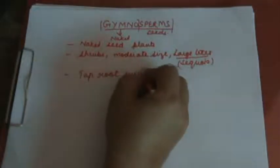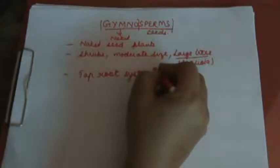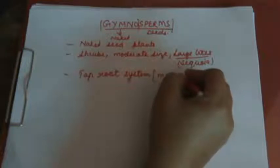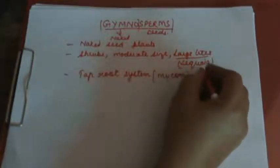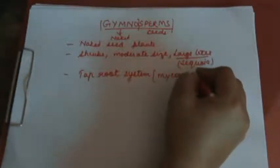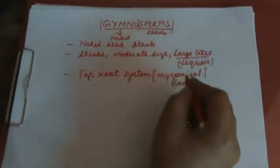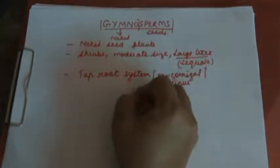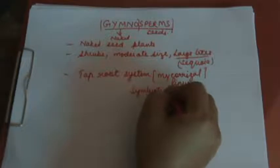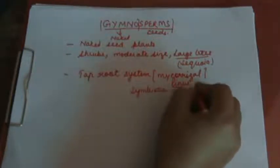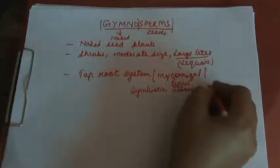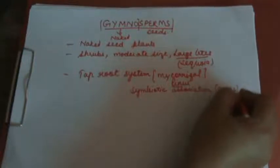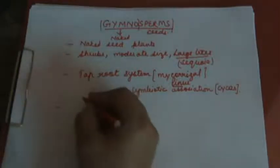Gymnosperms have a tap root system. They also show mycorrhizal association — a symbiotic relationship with fungi associated with the roots of the plant, occurring in conifers (finis). They also show symbiotic association, in which both organisms benefit from each other. Symbiotic association occurs in cycads.